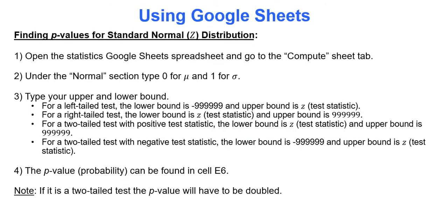In Google Sheets, we'll go to the compute tab and deal with the normal section to find the area of that region under the curve — whether it's left-tail, right-tail, or both tails.